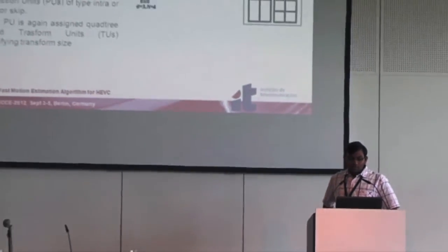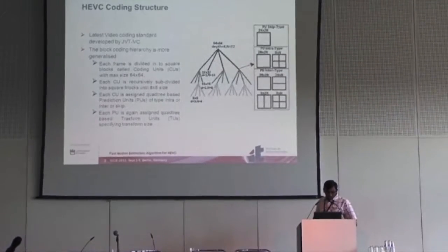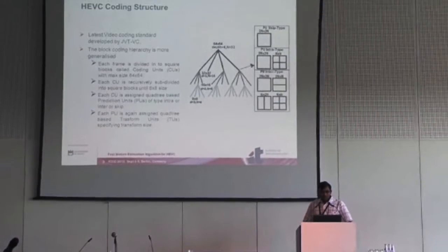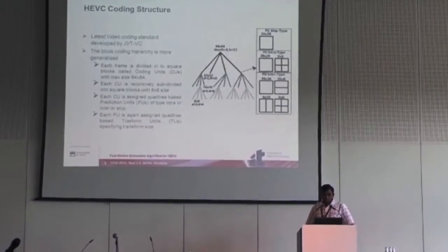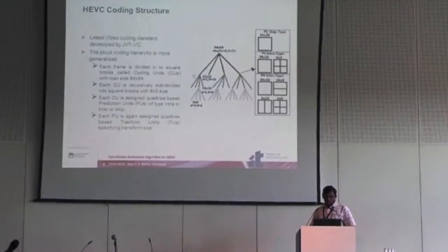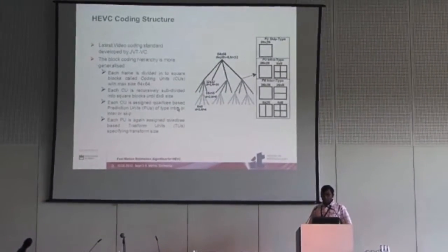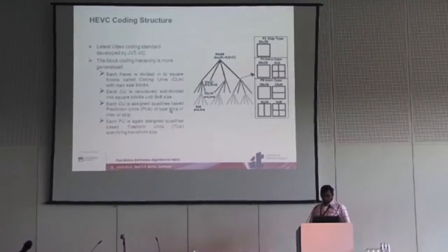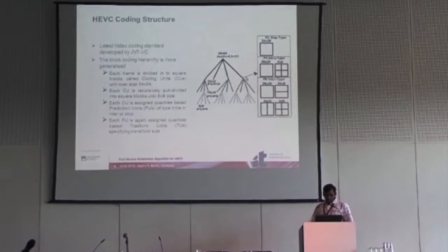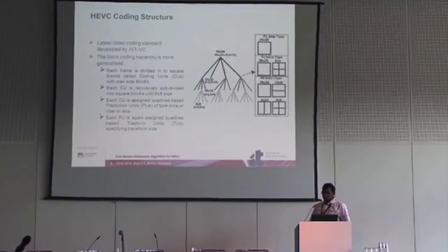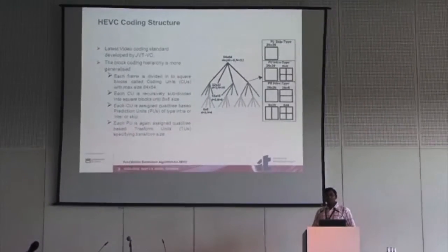The HEVC coding structure has a block coding hierarchy more generalized than AVC. We have 64 by 64 block sizes called coding units, and each coding unit is recursively subdivided into square blocks down to 8 by 8. Each coding unit is assigned prediction units and each PU is assigned transform units. Each CU is assigned prediction units of intra type, inter type, skip type, or the newly introduced merge type.